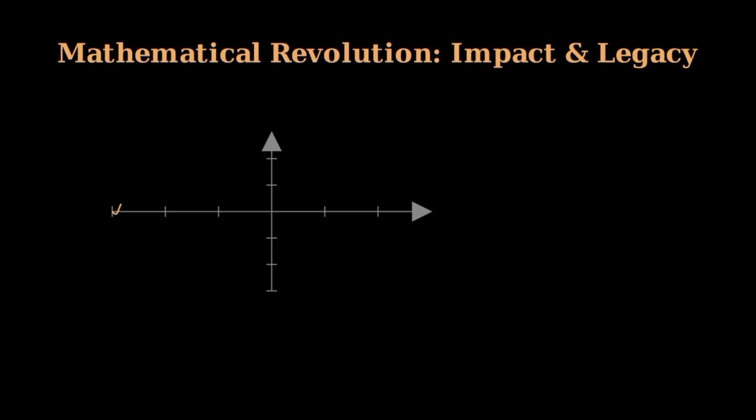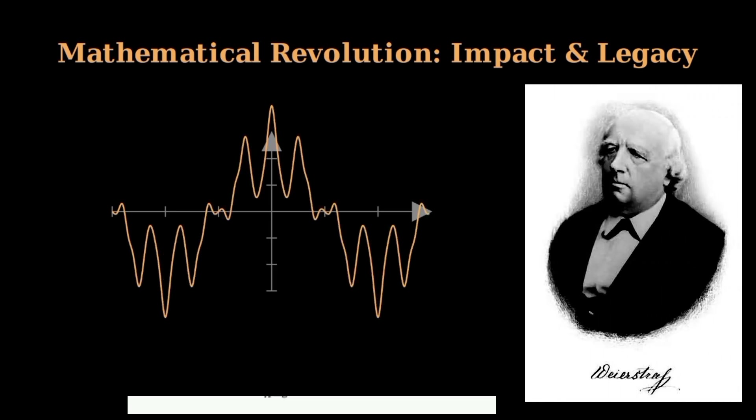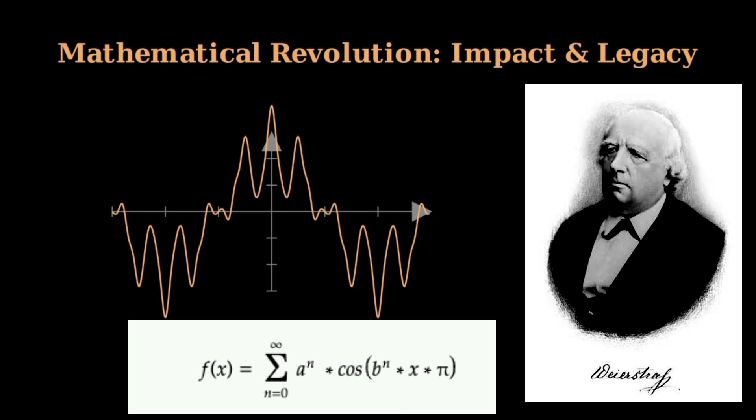The Weierstrass function represents one of mathematics' greatest paradigm shifts. In 1872, when Weierstrass first presented this function, it challenged the fundamental belief that continuous functions must be smooth and differentiable.